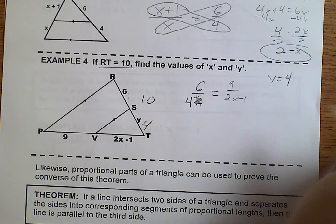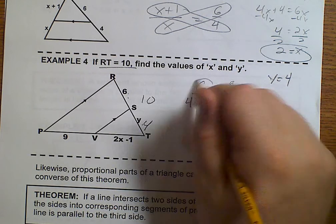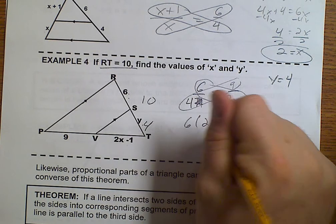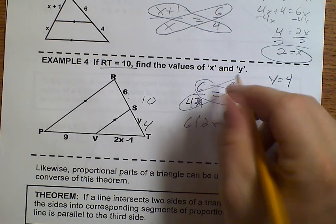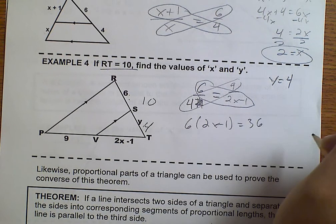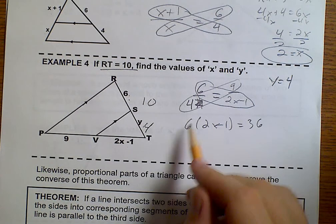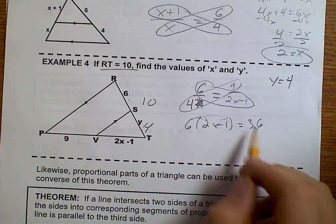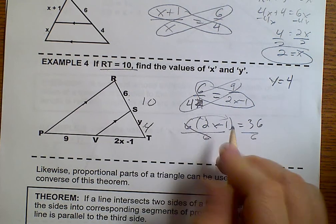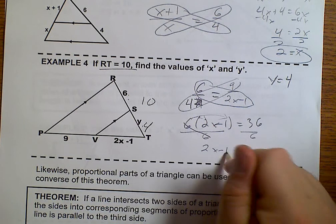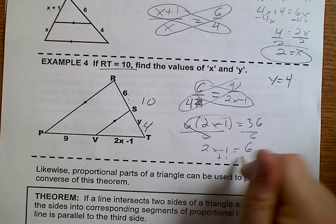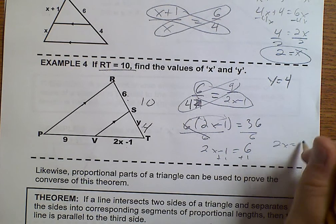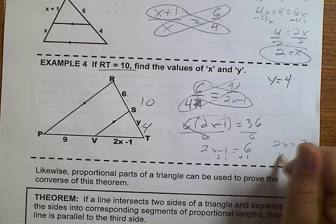Now that we know that Y is 4, I can actually do a little bit of cross multiplying and dividing. 6 times 2X minus 1 equals 9 times 4, which is 36. Now, normally I would say distribute. However, I have another 36 will divide by 6. So that will give me 2X minus 1 equals 6. Add 1, 2X must equal 7. So X equals 3.5.